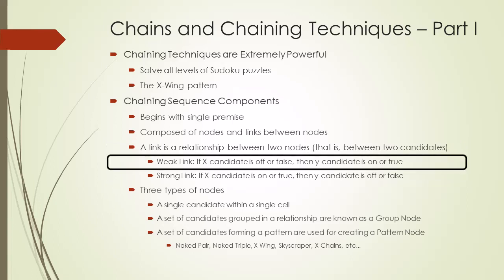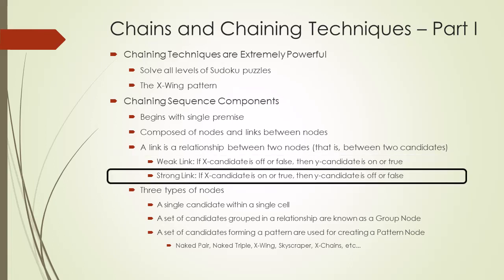A weak link is a relationship between two candidates where if one candidate is off or false, the other candidate is on or true. A strong link is a relationship between two candidates where if one candidate is on or true, then the other candidate must be off or false.